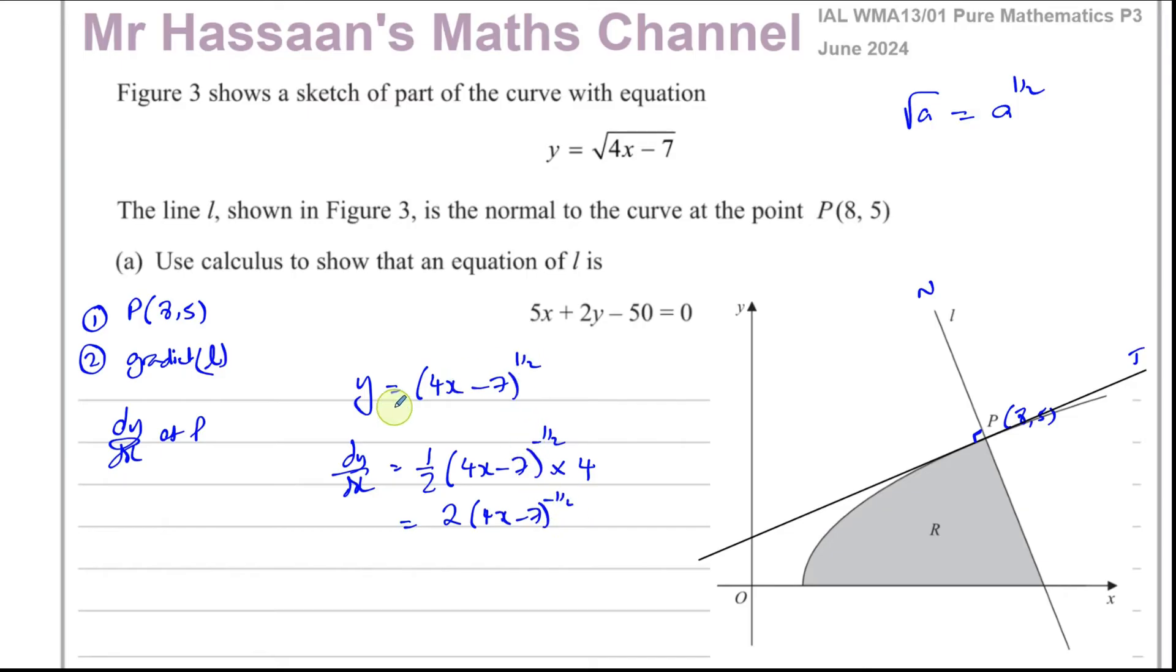So you end up with 4 times a half, which is 2 times 4x, and this is to the power of negative a half. 2 times 4x minus 7 to the power of negative a half. So we multiplied by the power. We took 1 from the power, because a half minus 1 is minus a half. And then we multiplied by the differential of what's inside the function. So this gives us something we can write in this form: 2 over the square root of 4x minus 7. We know that a to the power of negative n is the same as 1 over a to the power of n. And then to the power of half is the square root.